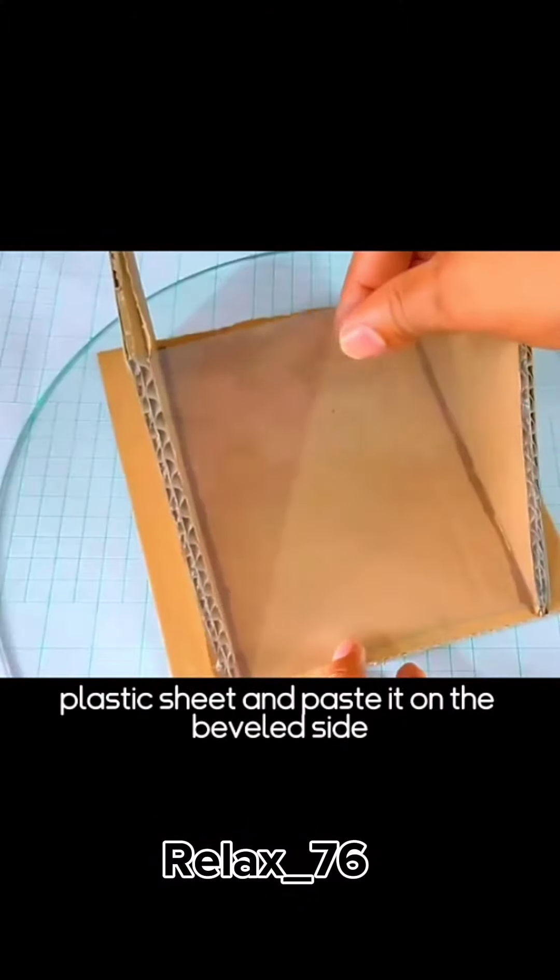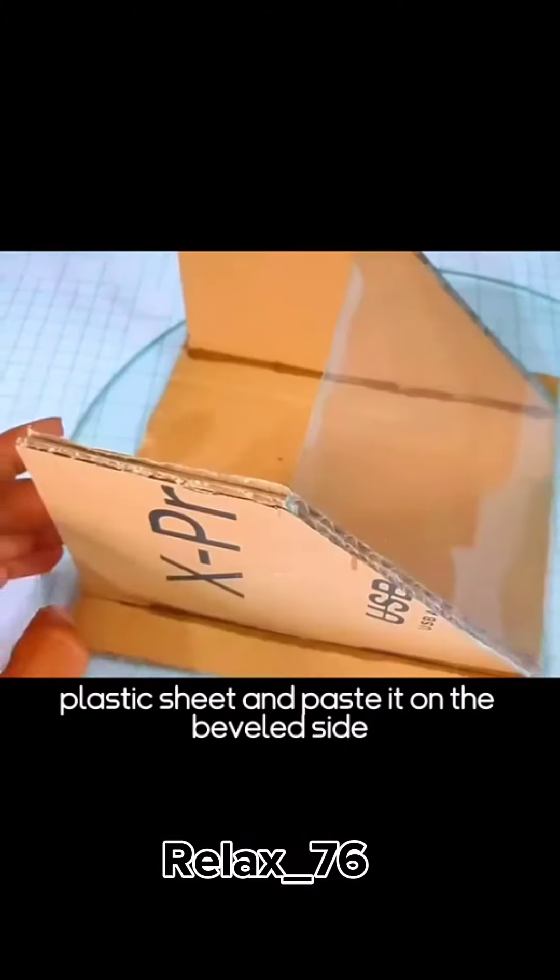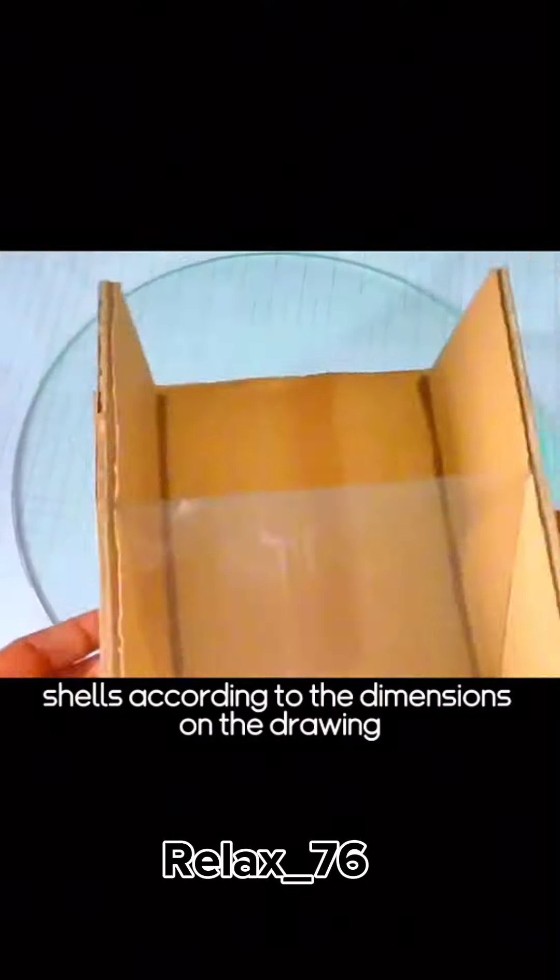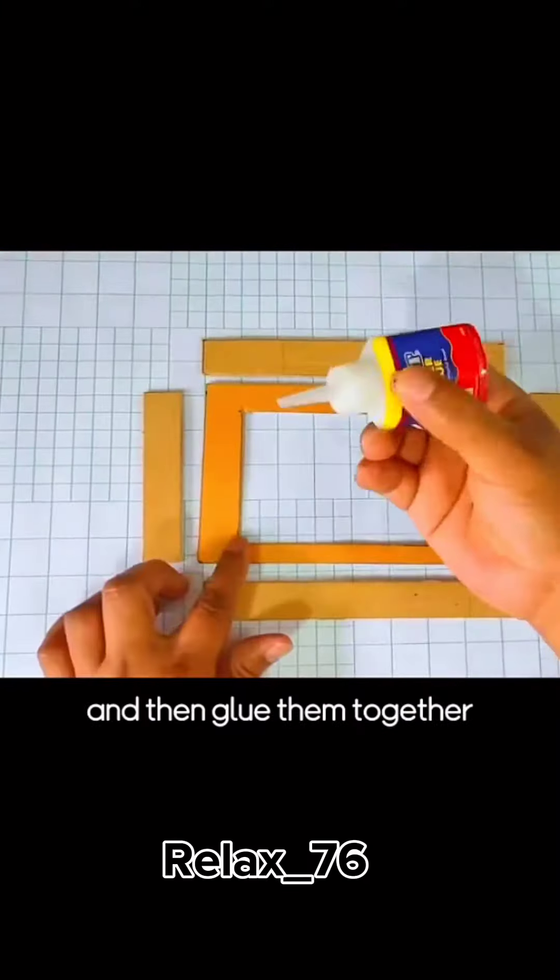Next, cut the transparent plastic sheet and paste it on the beveled side, paste it and then paste the cut triangles together, then cut the paper shells according to the dimensions on the drawing, and glue them together.